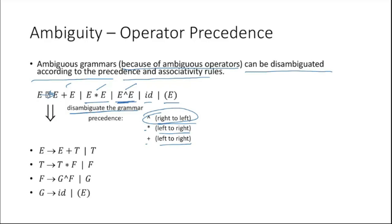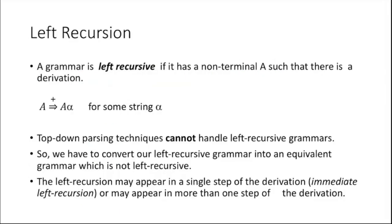The rewritten unambiguous grammar is: E → E plus T | T; T → T multiplication F | F; F → G to the power F | G; G → id | (E). All strings generated by the original grammar can also be generated by this new grammar, so both grammars represent the same language. But this new one is unambiguous while the original was ambiguous.